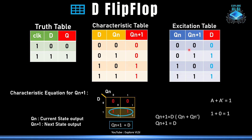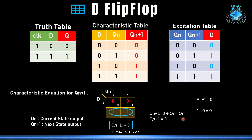For the D flip-flop excitation table: if the current state is 0 and we want the next state to be 0, D should be 0. When the current state is 0 and next state should be 1, D should be 1. When current state is 1 and next state should be 0, D should be 0. When current state is 1 and next state should also be 1, D should be 1. This is the excitation table for D flip-flop.